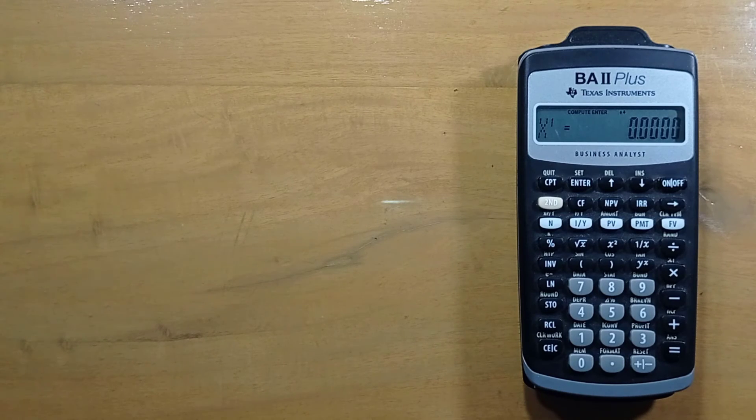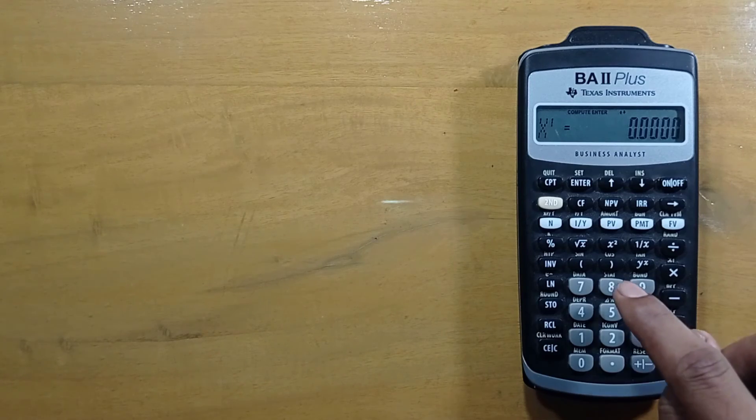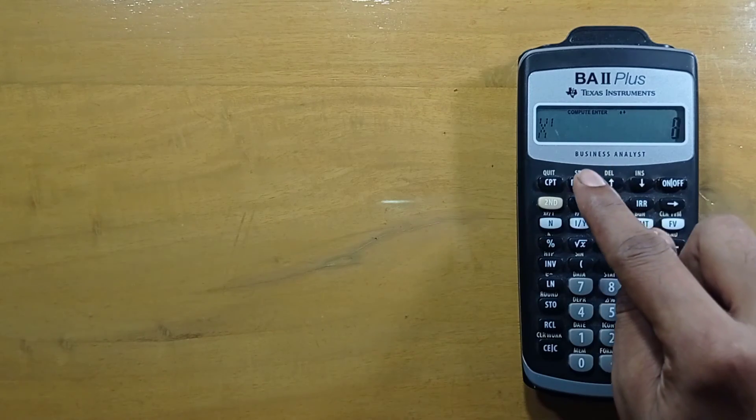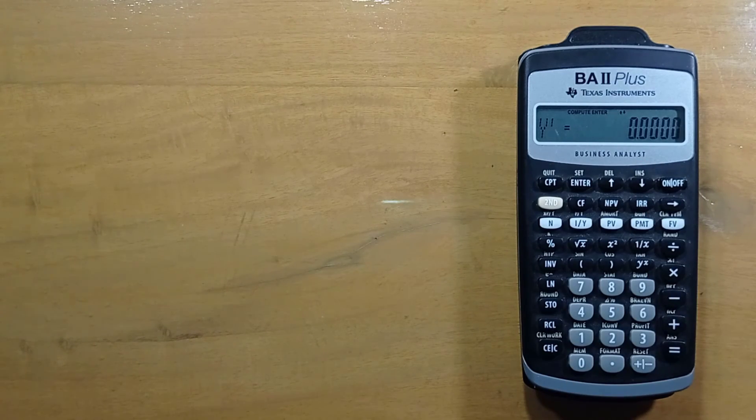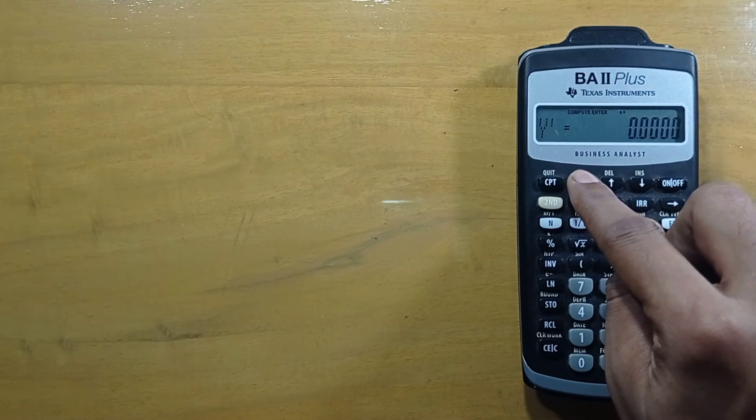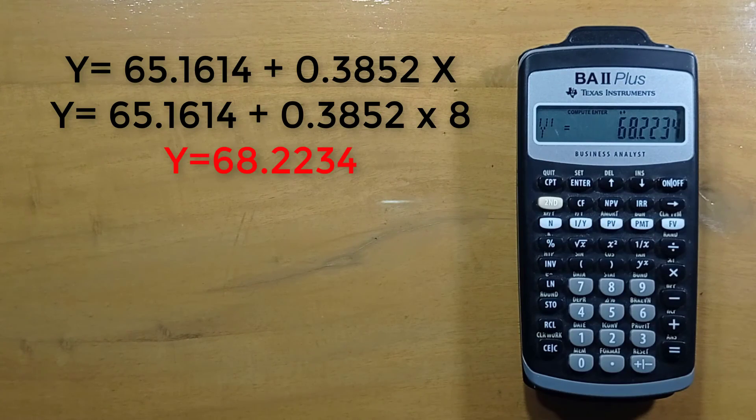This is just to compute y value given an x value. For example, if we put x equal to 8, then press enter, scroll down, and we want to see the value of y when x equals 8, so just press compute. This is our value of y when x equals 8, that is 68.2234.